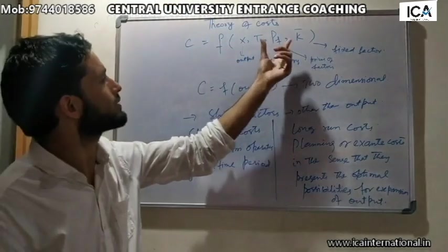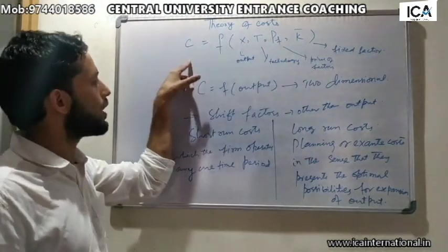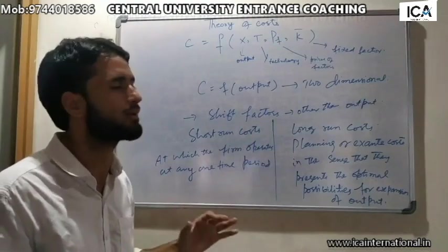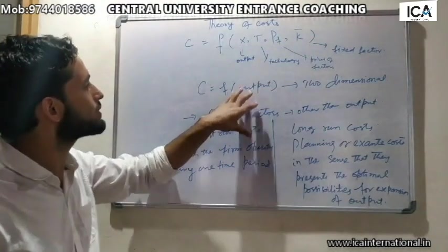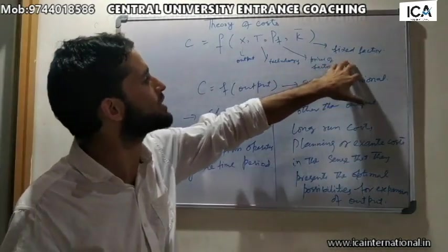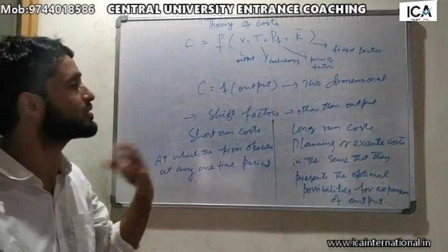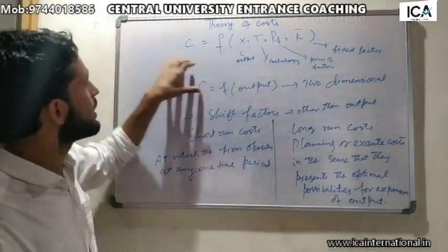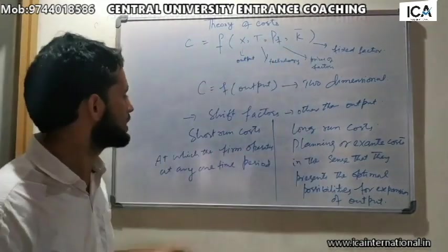All other factors except output that affect cost are the shift factors. Shift factors in the sense that if we assume a change in shift factors — that is other than output, a change in technology, change in prices of factors, or change in fixed factors — it will cause a shift in the cost curve. This is the reason we assume cost is a function of output and all other factors we hold constant.